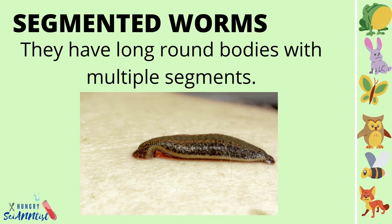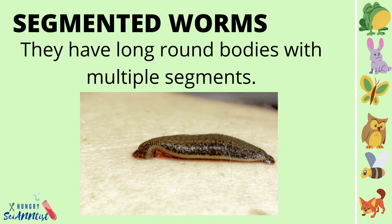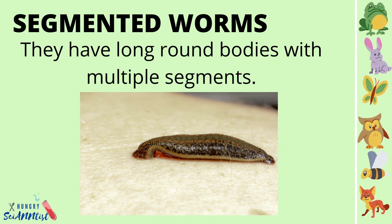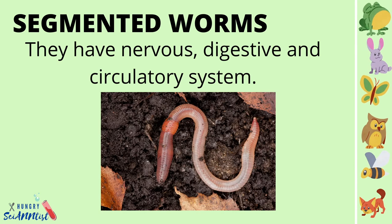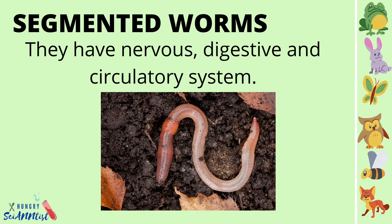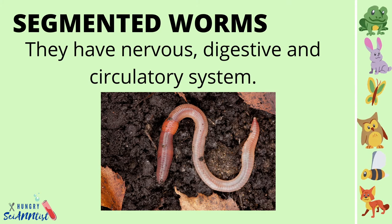Segmented worms. They have long, round bodies with multiple segments. They have nervous, digestive and circulatory systems.